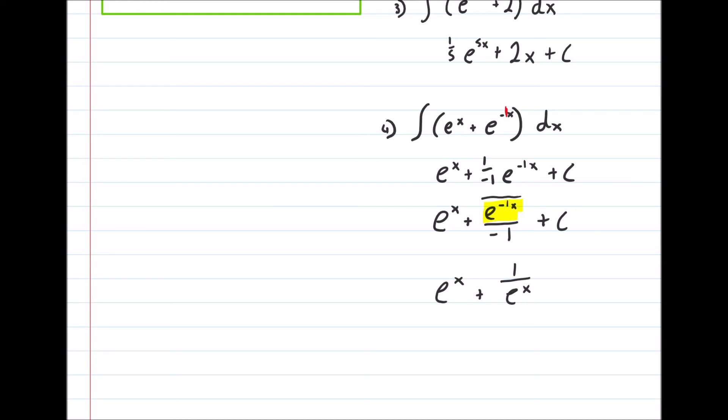So see what I've done there? Let's go back again. This bit here, that's the same as 1 over e to the 1x, or 1 over e^x. That's our rules of indices, and that's all over the minus 1 here, plus c.